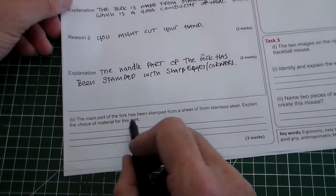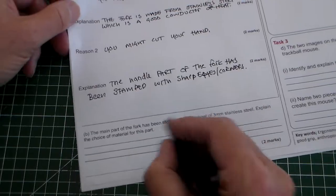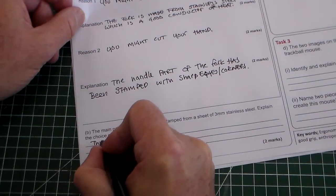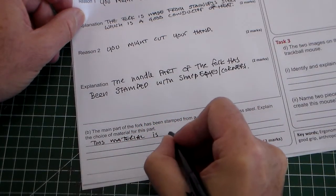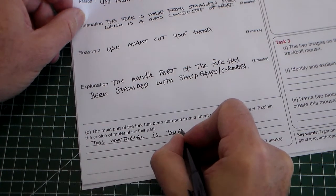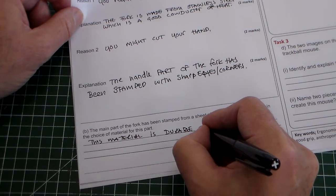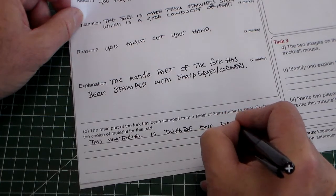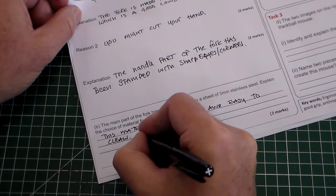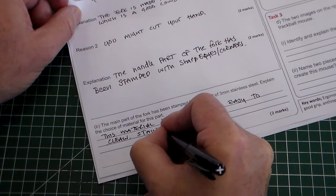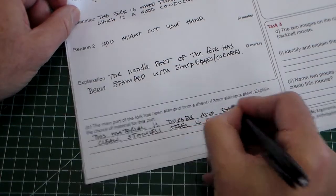So now we go on to part B. It says the main part of the fork has been stamped from three millimeter stainless steel. Explain the choice of material for this part. This material is durable - that means it lasts well, it doesn't degrade - and easy to clean. We could add: stainless steel is rust resistant.